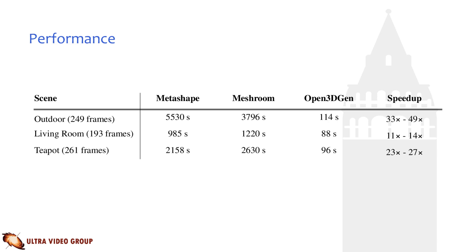Here the corresponding performance numbers can be seen for the same scenes as shown in the previous slide. The benefit of using dedicated depth data can especially be seen in highly complex scenes, such as the outdoor scene with a lot of good quality and distinctive feature points, where the speedup compared to the photogrammetry solutions can be almost up to 50 times.